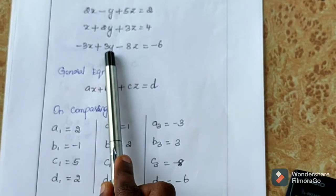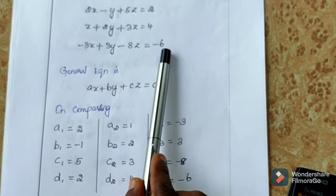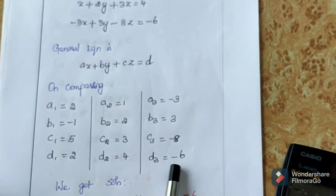A3 is minus 3, B3 is 3, C3 is minus 8, and D3 is minus 6.